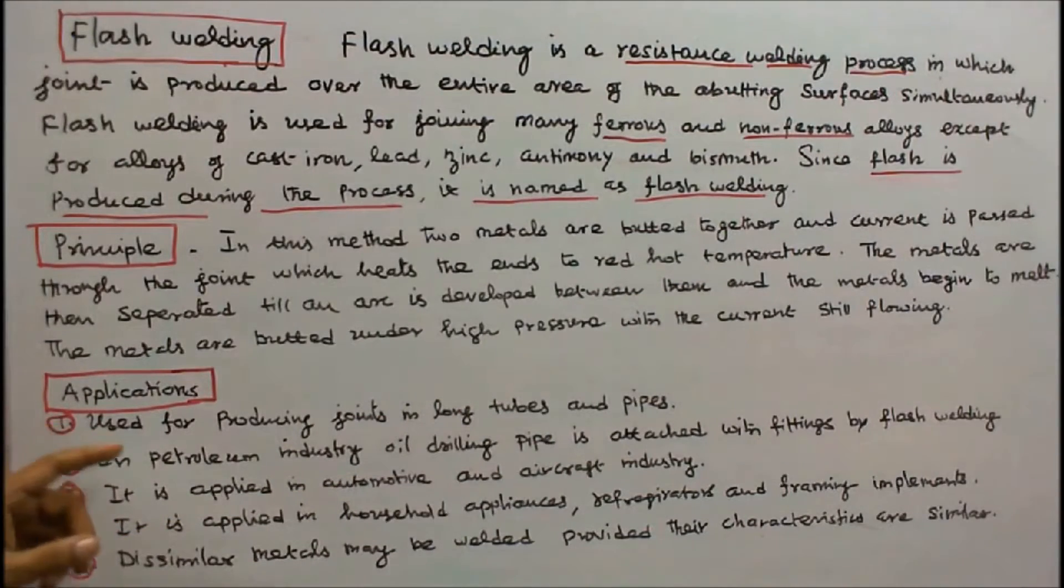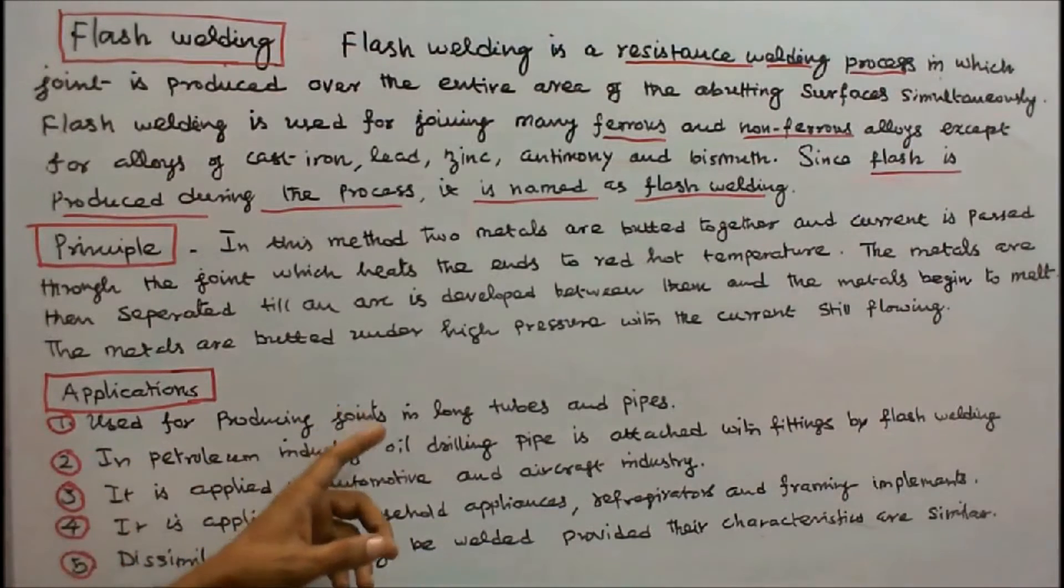Applications of Flash Welding: 1. Used for producing joints, long tubes and pipes. 2. In petroleum industry, oil drilling pipe is attached to fittings by flash welding.